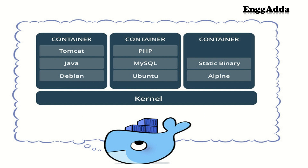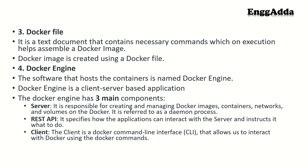With the help of a Dockerfile, we create the image, and then we run that image as a container. A Dockerfile is a file where we write commands to create a Docker image. Looking at the container diagram, in one container we might have Tomcat, Java, and Debian; in a second container, PHP, MySQL, and Ubuntu; and in a third, a Static Binary with Alpine. A Dockerfile is a text document containing necessary commands that help assemble or create a Docker image.